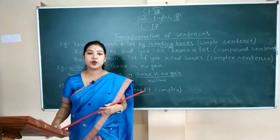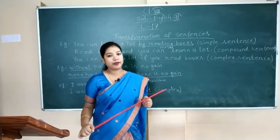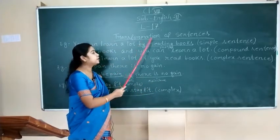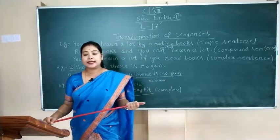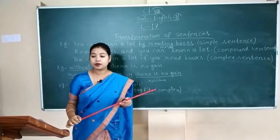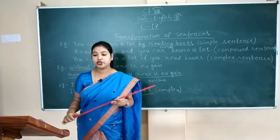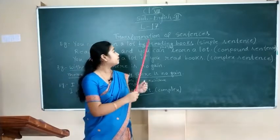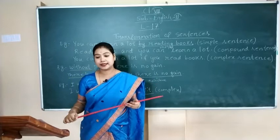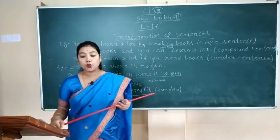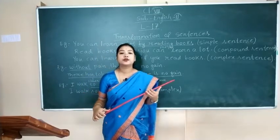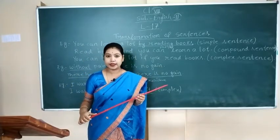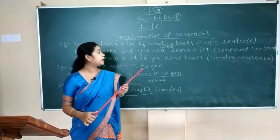Hello students, today I am here with lesson number 17 of your English grammar book. The name of the lesson is transformation of sentences. We know that sentences have different structures like simple sentence, compound sentence, and complex sentence. Here we will learn transformation of sentences. When we transform sentences into different forms without changing the meaning, it is known as transformation of sentences. The meaning remains the same. It can be done by expanding a word into a phrase or a clause.